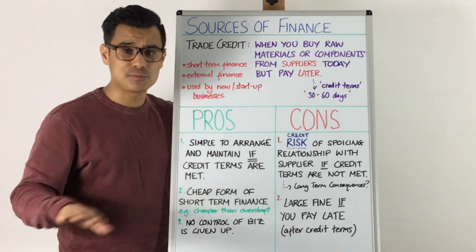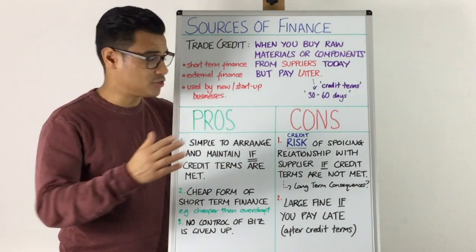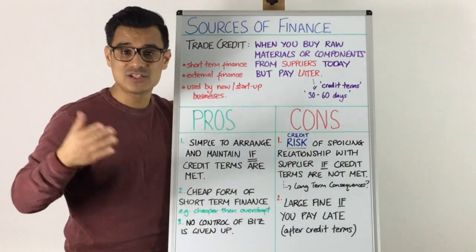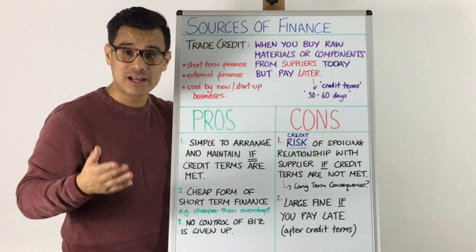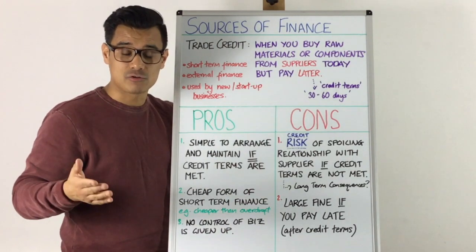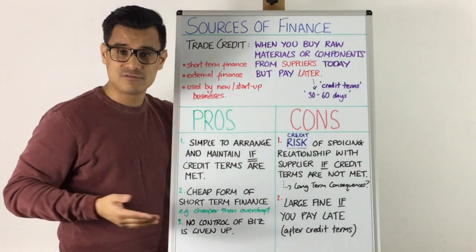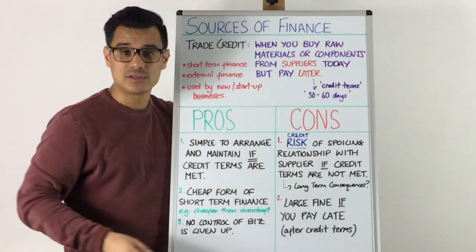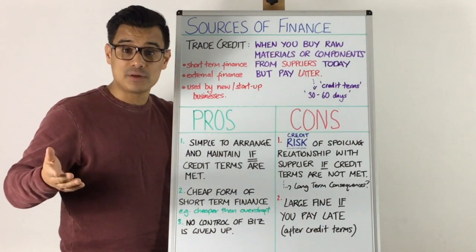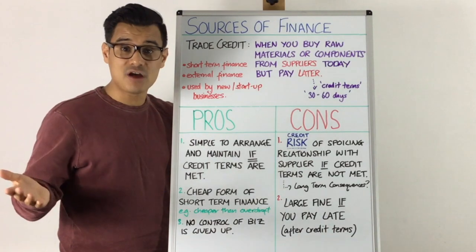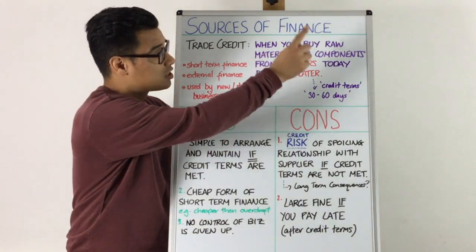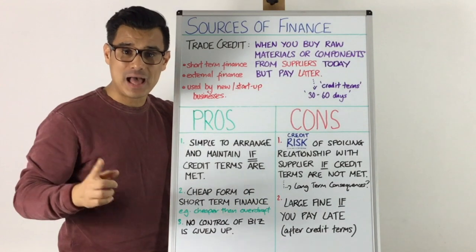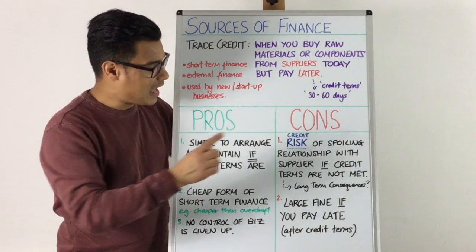On the cons side: there is a risk that if you do not make payment within your agreed credit terms — whether 30 to 60 days — you might spoil the relationship with your supplier. Worst case, if you make payments very late or overdue multiple times, the supplier may no longer supply to you. This could be a serious problem if no other supplier can provide the raw materials your business needs. This risk is known as credit risk.